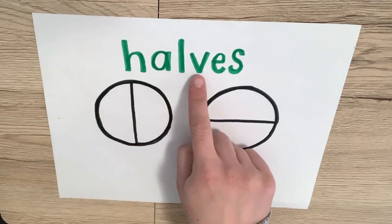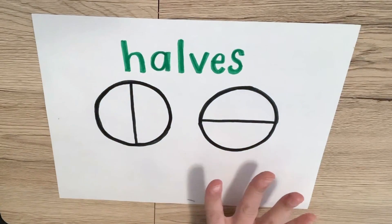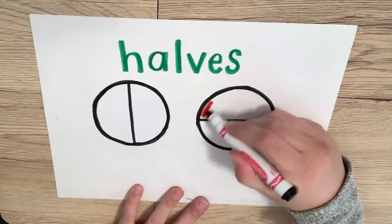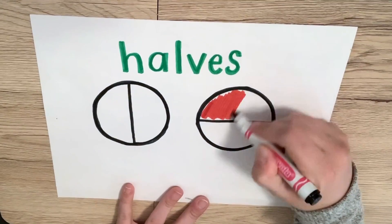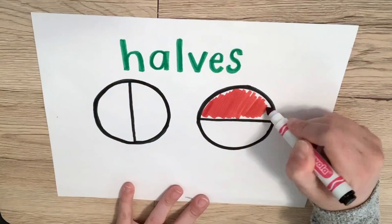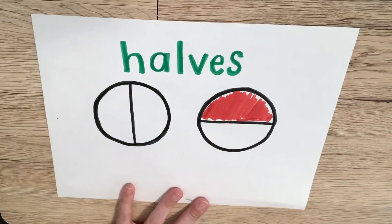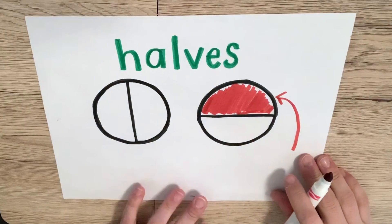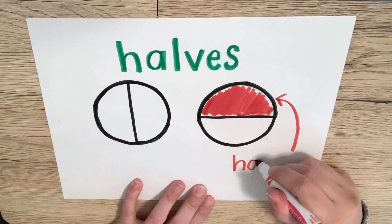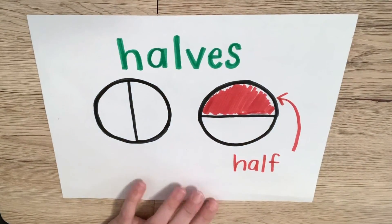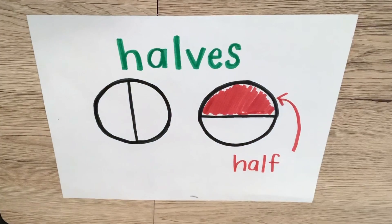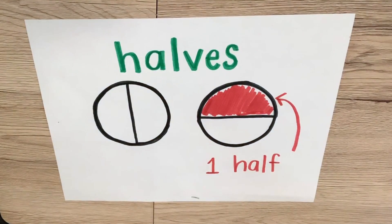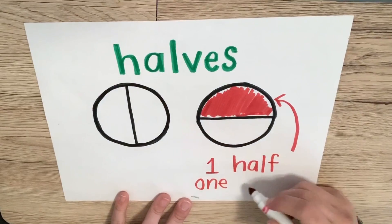It's kind of a funny spelling — H-A-L-V-E-S — so these circles are divided into halves. Now if I were to color or shade in one of those parts — see how this part is now colored or shaded in? When we talk about that specific part, we would call it a half. So I would say half of the circle is colored in or shaded. I could even say one half is colored in, or I could even write the words "one half."